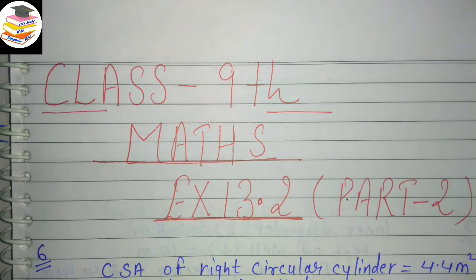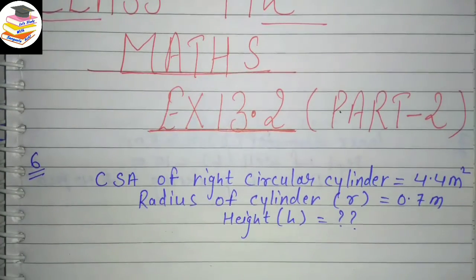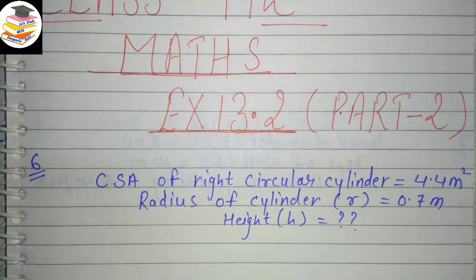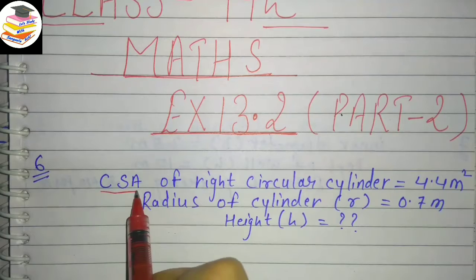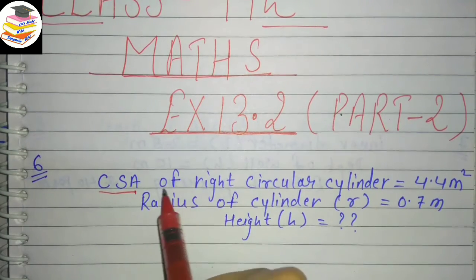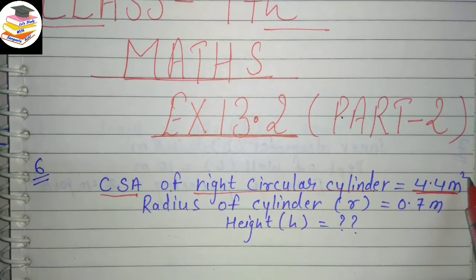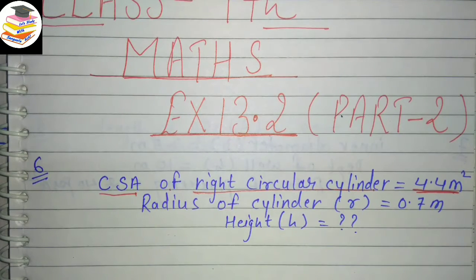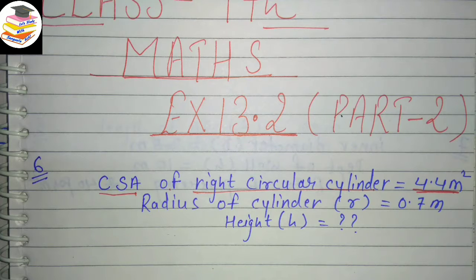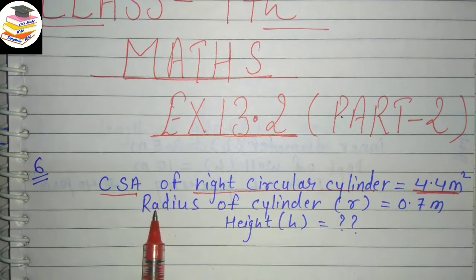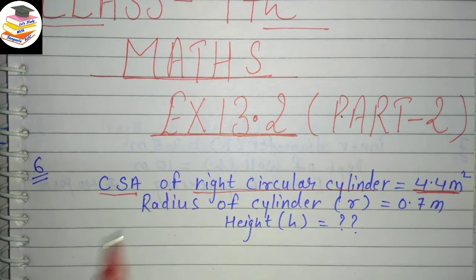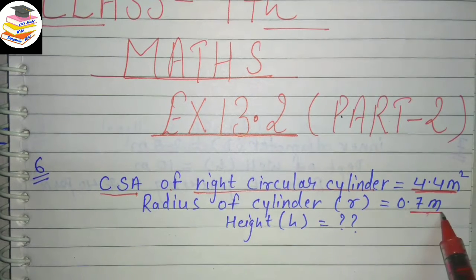Question number 6 says: curved surface area of a right circular cylinder is 4.4 meter square. So, CSA (curved surface area) is given as 4.4 meter square. Next, the radius of the base of the cylinder is 0.7 meter.